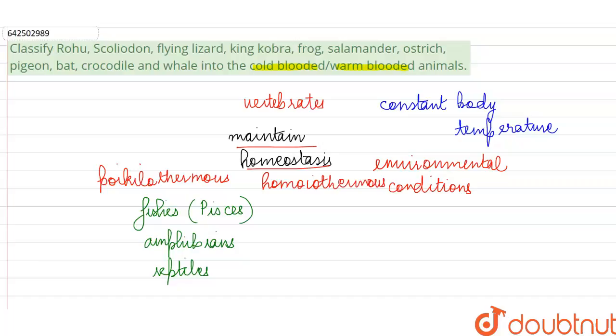So, the terms which have been given to us in the question, cold-blooded and warm-blooded, are used synonymously with these terms. Poikilothermus animals are also called cold-blooded and homeothermus animals can also be called warm-blooded.